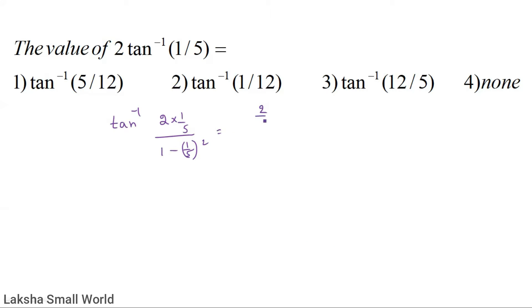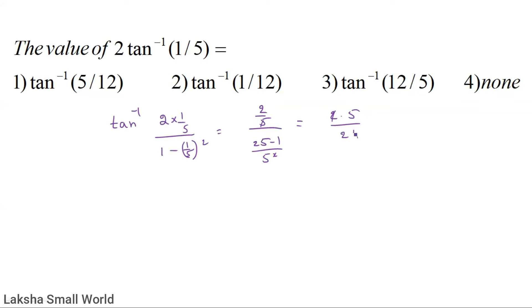So we get 2/5 divided by (25 minus 1)/25. The 5s cancel in the numerator, giving 2×5 divided by 24, which equals 10/24.